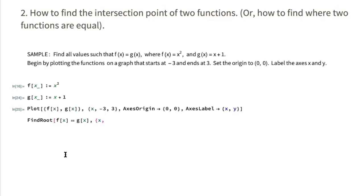You're asked to begin by plotting the function on a graph that starts at negative three and ends at positive three. Set the origin to zero zero. Label the axes x and y. There is a reason why it is recommended that you always graph your function. And that's because there can be multiple intersection points and you need to have a rough idea of where they would be.